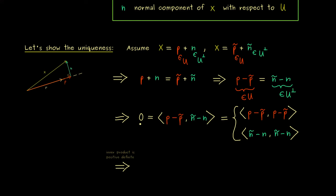It implies if we put the same vector left and right in the inner product and we get out zero, then this vector has to be the zero vector. So we get p - p̃ = 0 and ñ - n = 0. And hence the decomposition was the same all along. So you see, this shows the uniqueness we wanted.